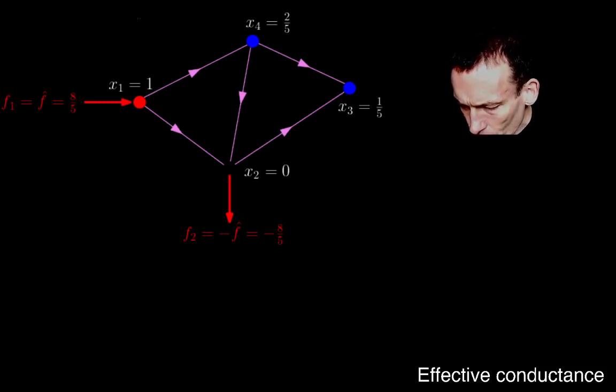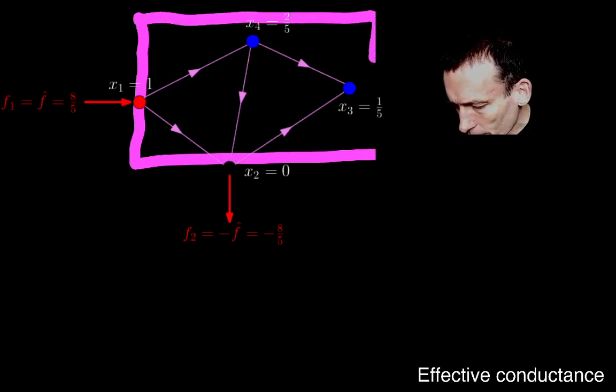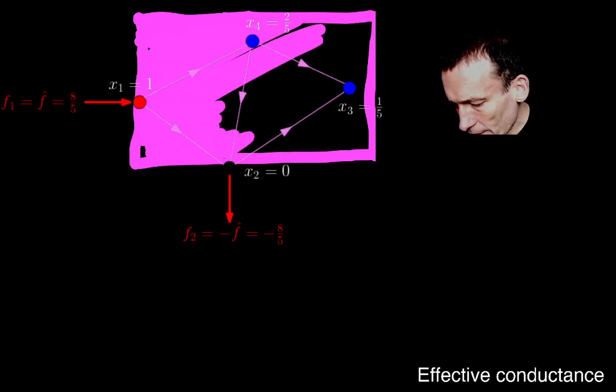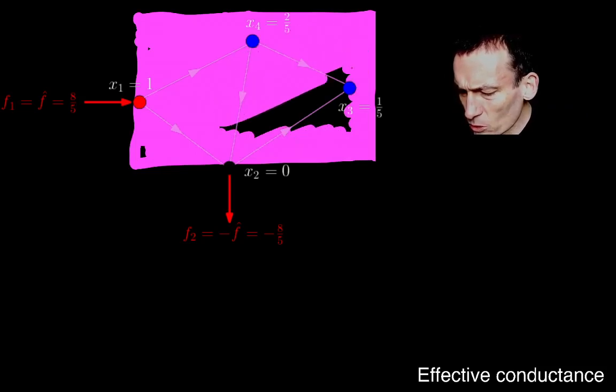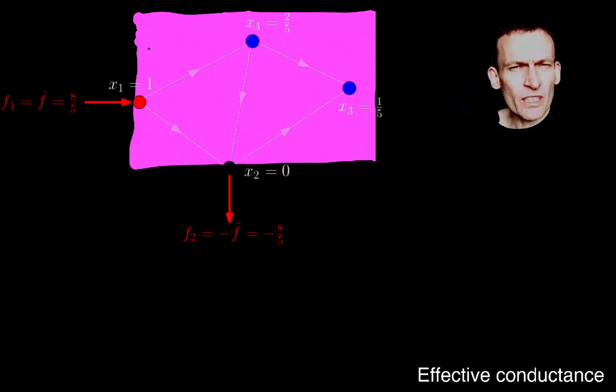Now, look what I'm going to do. I am going to draw this following box around my circuit, and I'm going to colour it in. And I'm colouring it in because I want to think of it now. I kind of want to ignore the details of the circuit, all those edges and nodes, and I want to just consider the pink box now kind of as a single conductor between the red and the black nodes.